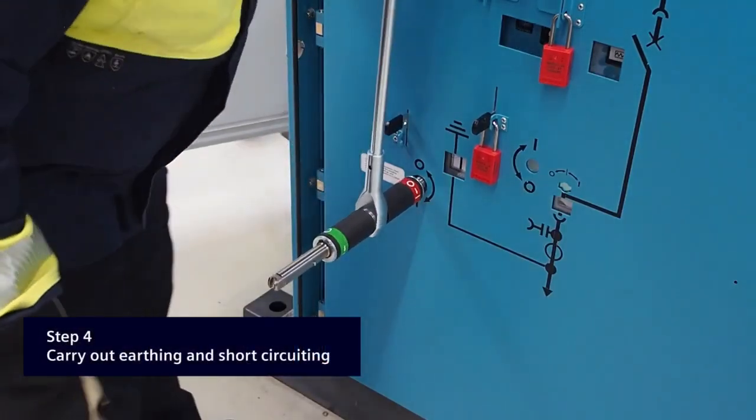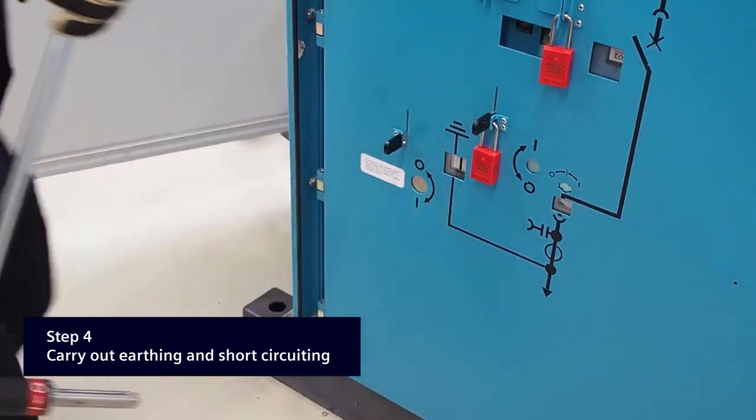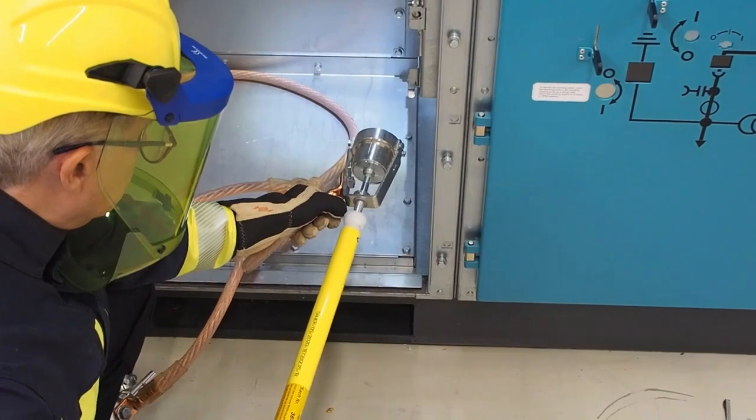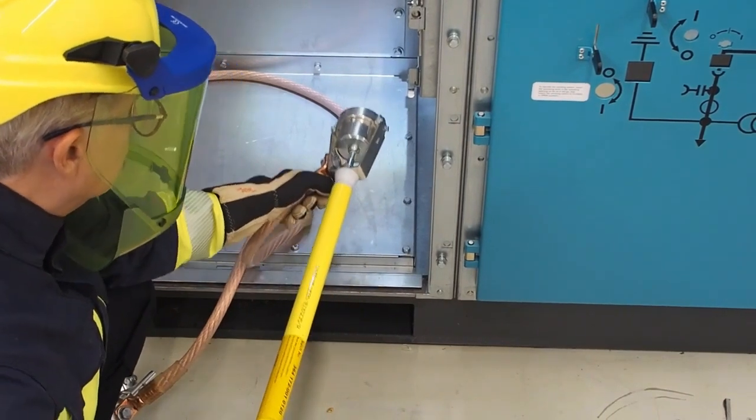The fourth step is to ensure that the bus bar and feeder are earthed. You can do this by using the Switchgear Earthing Switch or, if none exists, with a portable earthing kit.